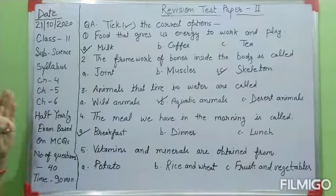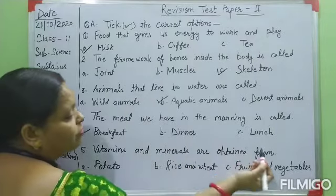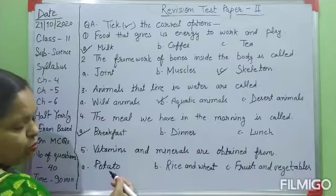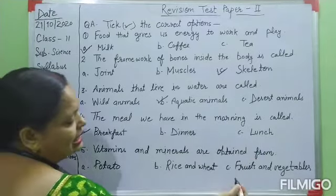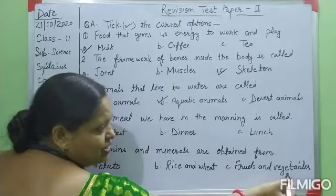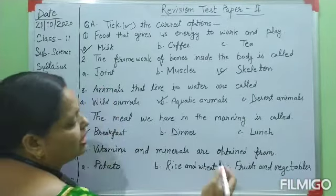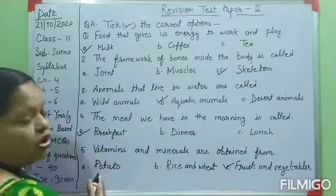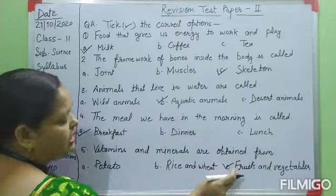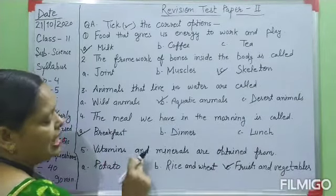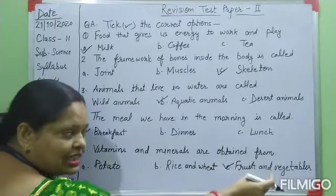Fifth question: vitamins and minerals are obtained from. The options given are: A — potato, B — rice and wheat, C — fruits and vegetables. It means all fruits and all green vegetables. Options A and B are both wrong. Your right option, according to this sentence, is C — vitamins and minerals are obtained from fruits and vegetables.